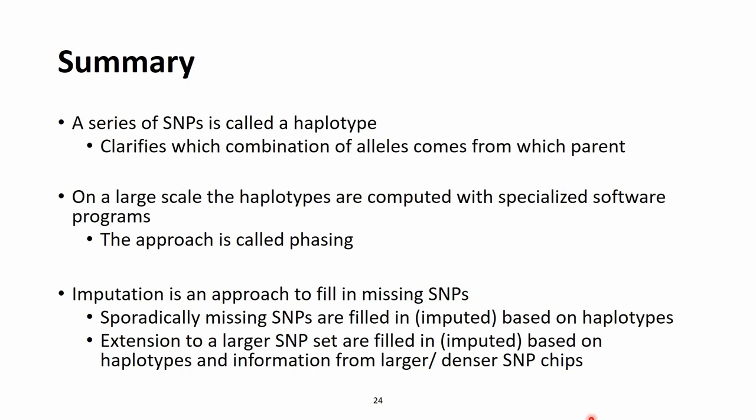Phased haplotypes can be used in the so-called imputation process, which is filling in missing SNPs. We have options: we can fill in sporadically missing SNPs due to genotyping errors, or we can extend a smaller SNP chip to a larger one based on haplotypes from denser chips — potentially saving money, since lower density chips cost less and imputed genotypes are often sufficient for research.